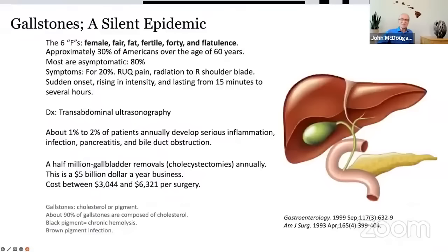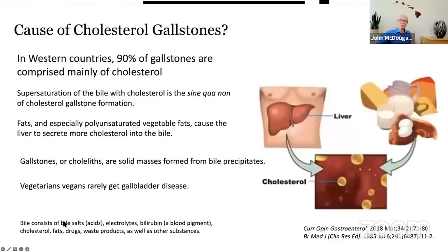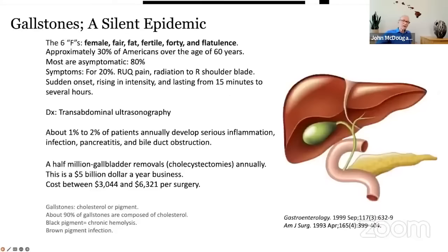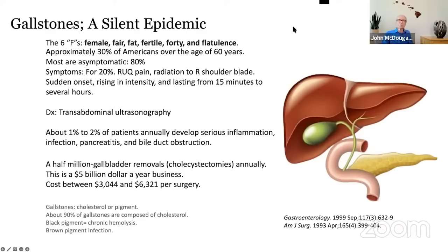The most common problem with the liver or biliary system is gallbladder disease. Thirty percent of Americans over the age of 60 have gallbladder disease. There's an acronym all medical students learn for who's most likely to have it — the Six F's: female, fair, fat, fertile, forty, and flatulent. That gives you probably up to a 50% chance of having gallbladder disease. But most of these people never had any pain — they just had silent, asymptomatic gallstones and maybe a little inflammation.